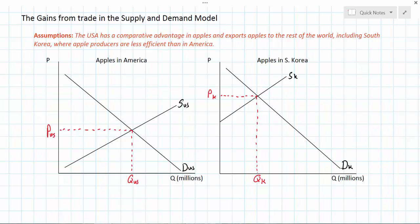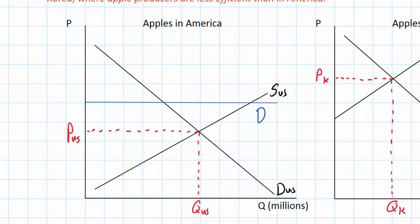I'm going to draw a world demand curve for apples in the graph on the left, which will be greater than domestic demand since in the entire world there are more people who wish to buy apples than in the United States alone. The blue line represents the world demand for apples as seen by the United States. This world demand curve is horizontal, reflecting the fact that demand from the rest of the world is perfectly elastic — meaning the output of American farmers has no impact on the world price of apples.